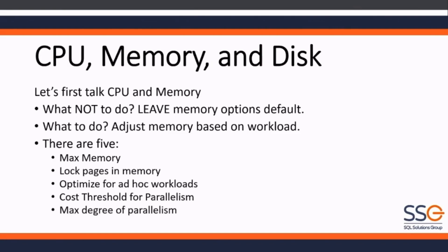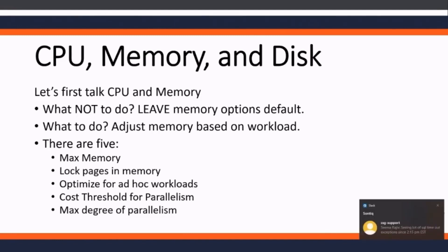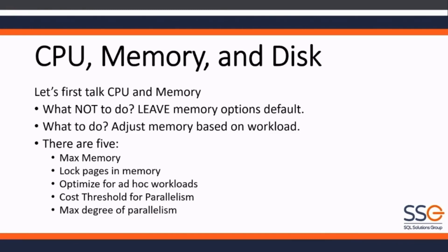The other setting is max degree of parallelism, and it's tied hand in hand with cost threshold of parallelism. When SQL Server decides to parallelize a query, it looks at max DOP and says, how many processors can I use to parallelize this query? So cost threshold of parallelism says queries above this cost should go parallel, and max degree of parallelism determines how many processors can be used. Those two go hand in hand.